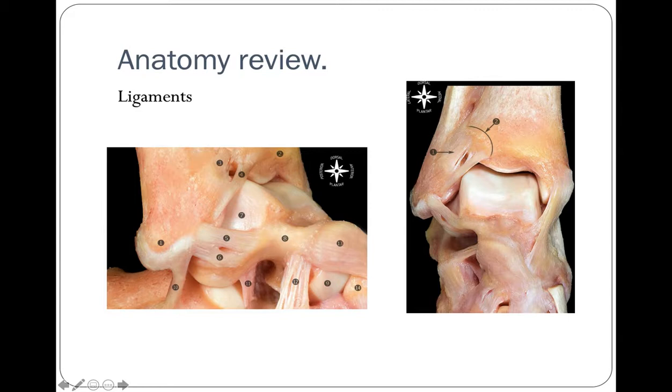The syndesmosis is comprised of three ligaments: the anterior inferior tibiofibular ligament, the interosseous ligament, and the posterior tibiofibular ligament. The medial stability is obtained with the deltoid ligament.